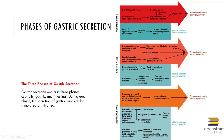The gastric phase accounts for about 50 to 60% of the total gastric acid secretion. This is the period in which swallowed food or partially digested protein activates the gastric activity.